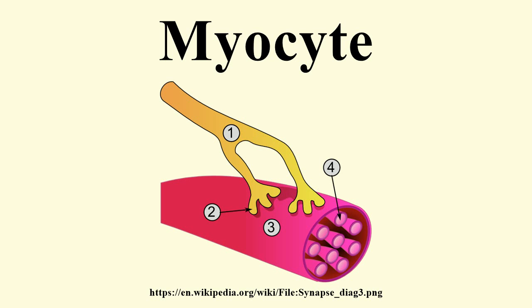The sarcoplasmic reticulum, a specialized type of smooth endoplasmic reticulum, forms a network around each myofibre of the muscle fiber. This network is composed of groupings of two dilated end sacs called terminal cisternae, and a single transverse tubule, or T-tubule, which bores through the cell and emerges on the other side. Together, these three components form the triads that exist within the network of the sarcoplasmic reticulum, in which each T-tubule has two terminal cisternae on each side of it. The sarcoplasmic reticulum serves as a reservoir for calcium ions, so when an action potential spreads over the T-tubule, it signals the sarcoplasmic reticulum to release calcium ions from the gated membrane channels to stimulate a muscle contraction.